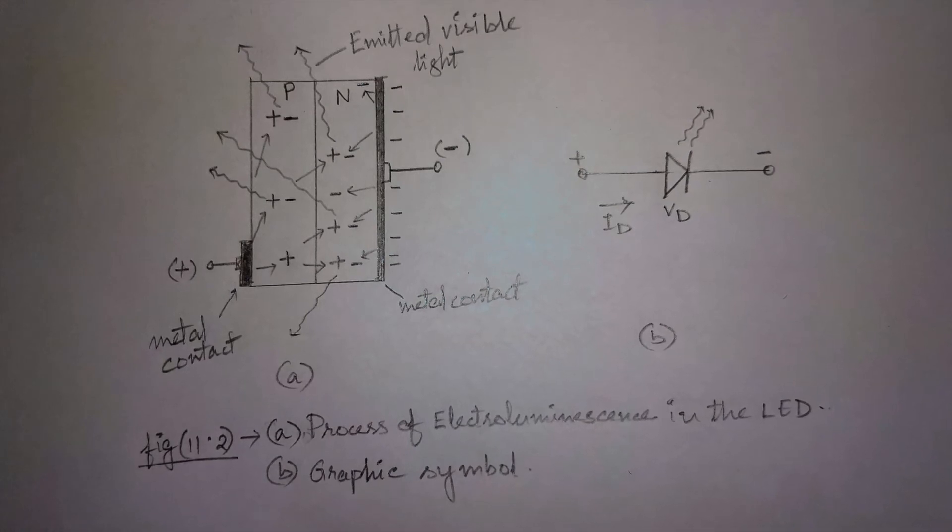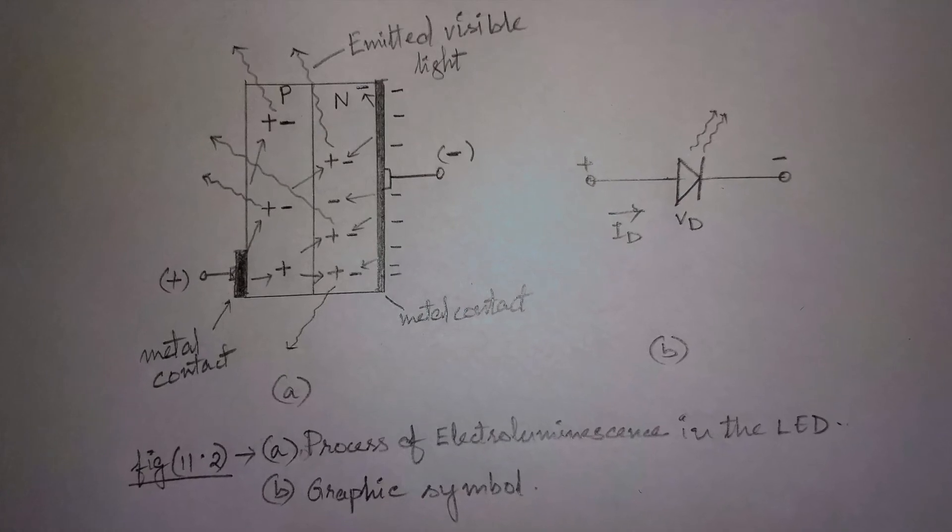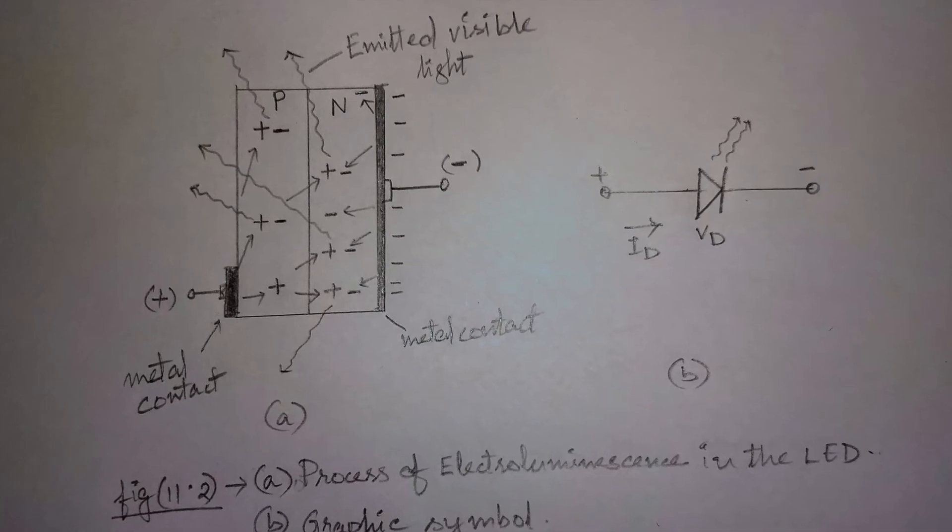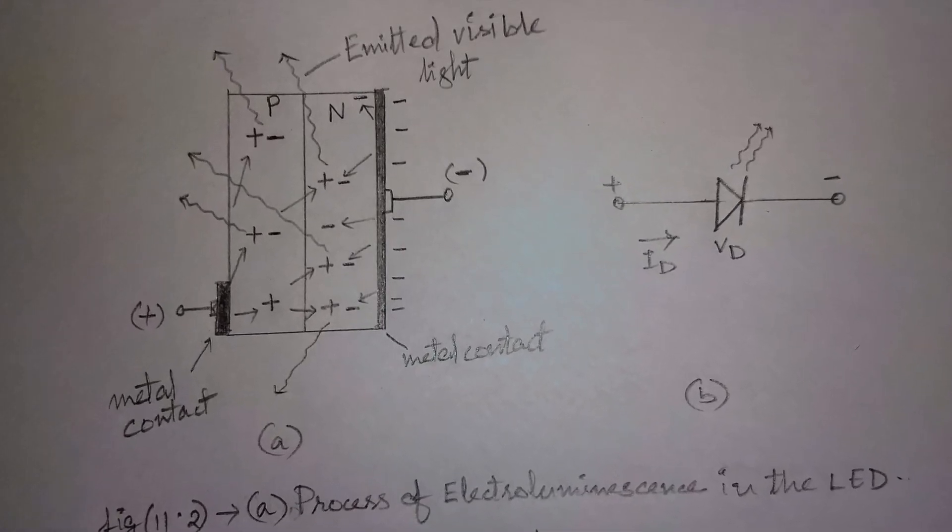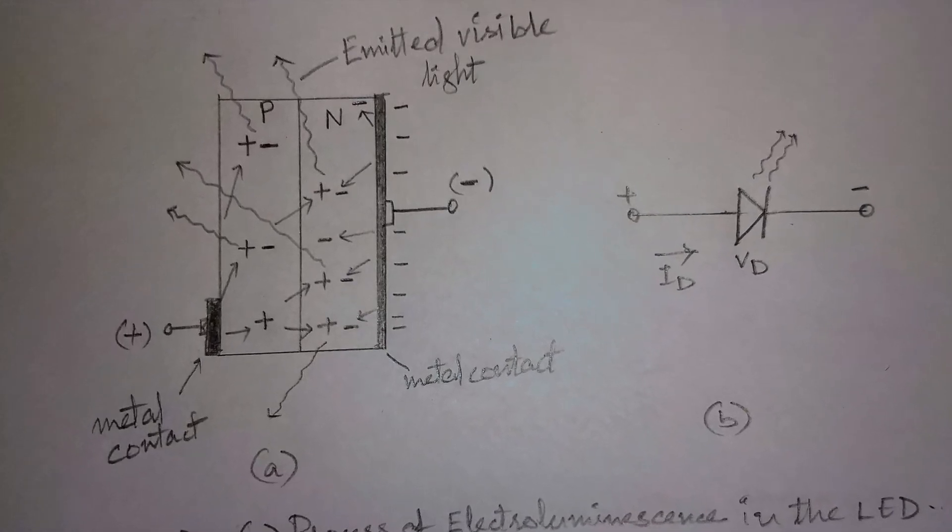The conducting surface connected to the P-type material is much smaller to permit the emergence of maximum number of photons of light energy. Point to be noted that the recombination of injected carriers due to the forward biased junction results in emitted light at the site of recombination.